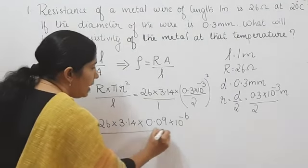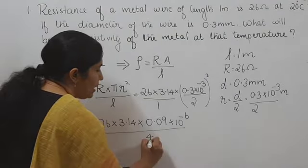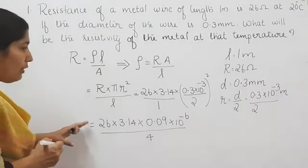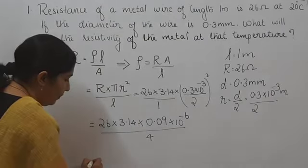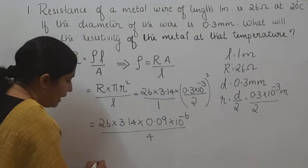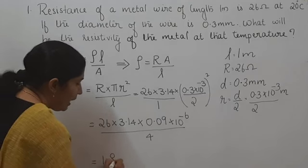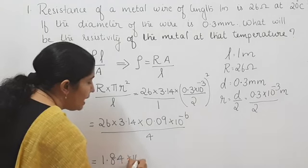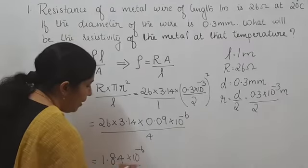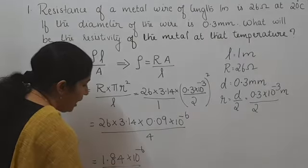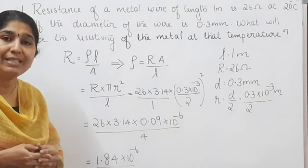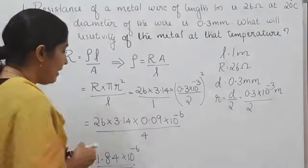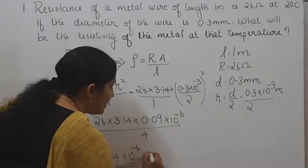Divided by 4, since 2 square is equal to 4. On solving this value, we get 1.84 into 10 raise to minus 6. The unit of resistivity is ohm meter, so rho is equal to 1.84 into 10 raise to minus 6 ohm meter.